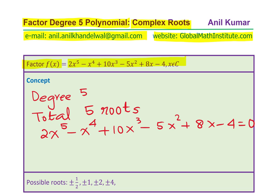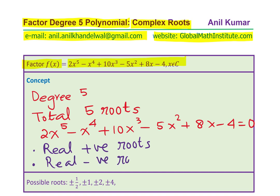Roots could be real or complex. In all, there are 5 roots. The question is: how many real positive roots, how many real negative roots? The remaining will be complex roots. That is the kind of exercise we are looking into.